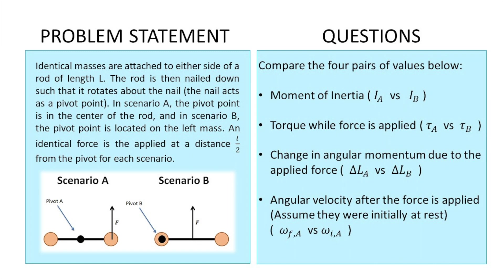We basically have some masses attached to both sides of a rod of length L. The rod is then nailed down such that it rotates around the nail. In the first scenario the pivot point is in the center, and in the second scenario the pivot point is at one of the masses. An identical force is then applied at a distance L/2 from the pivot in each scenario. We have to compare: which scenario has the greatest moment of inertia, which have the same torque, change in angular momentum, and angular velocity after the force is applied.